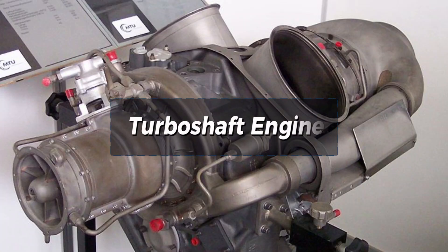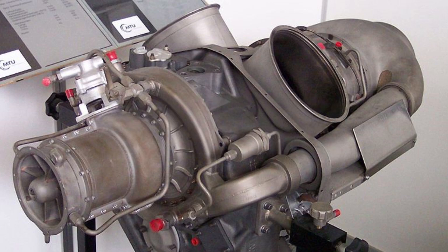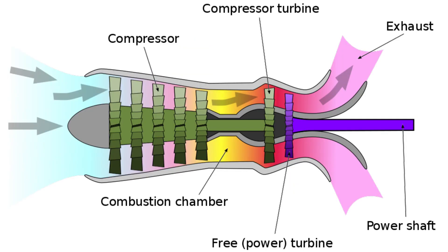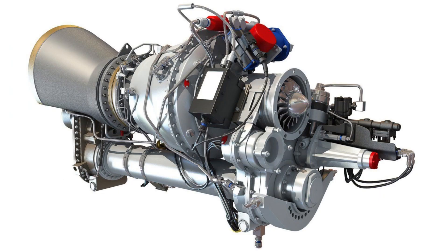Coming up next is turboshaft engines. A turboshaft engine is a form of gas turbine that is optimized to produce shaft power rather than jet thrust. In concept, turboshaft engines are very similar to turbojets, with additional turbine expansion to extract heat energy from the exhaust and convert it into output shaft power.